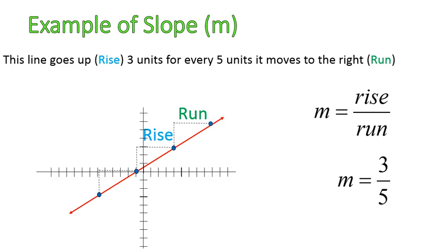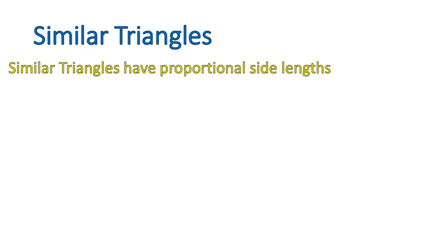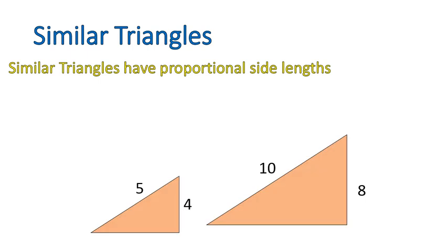And that's what slope is. It's a constant rate of change. Now, we're going to change gears just a little bit and talk about similar triangles. Similar triangles have proportional side lengths.